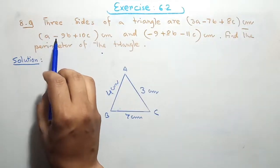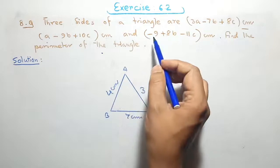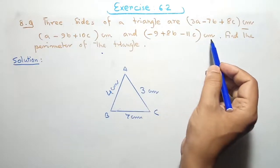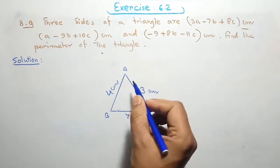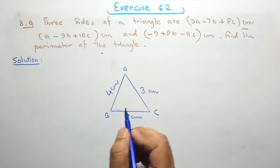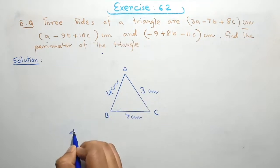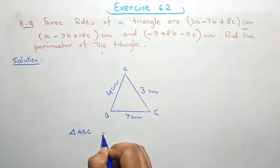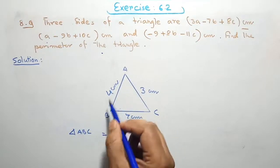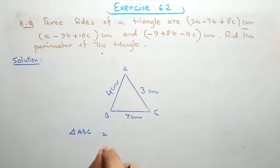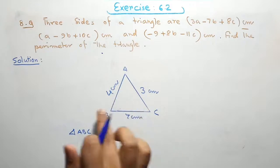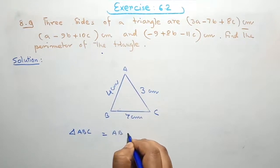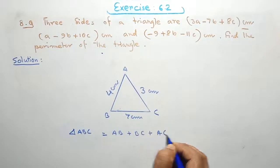Question 8. Three sides of a triangle are: 3a minus 7b plus 8c centimeters, a minus 3b plus 10c centimeters, and minus 9 plus 8b minus 11c centimeters. Find the perimeter of the triangle. If we consider a triangle ABC, to find the perimeter we add all the sides — AB plus BC plus AC — and the result is the perimeter of the triangle.